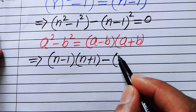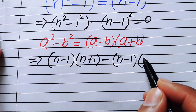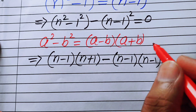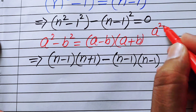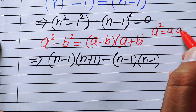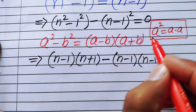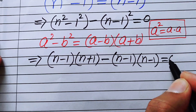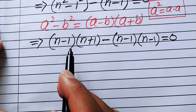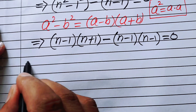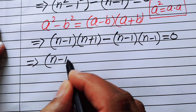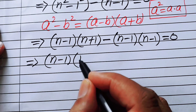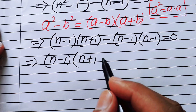Now I write n minus one whole squared as n minus one times n minus one, using the identity a squared equals a times a. Focusing on both terms, you can see that n minus one is the common factor, so we take it out. You get n minus one times the quantity: taking n minus one out of the first term leaves n plus one.